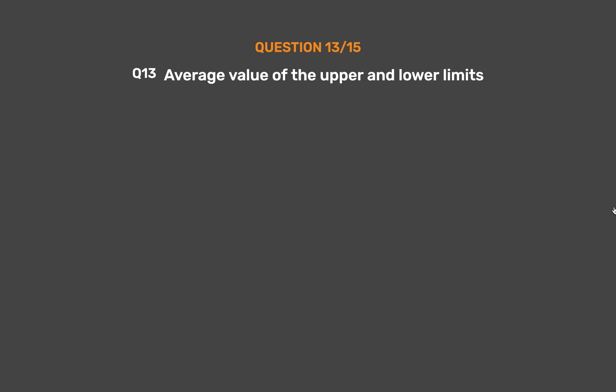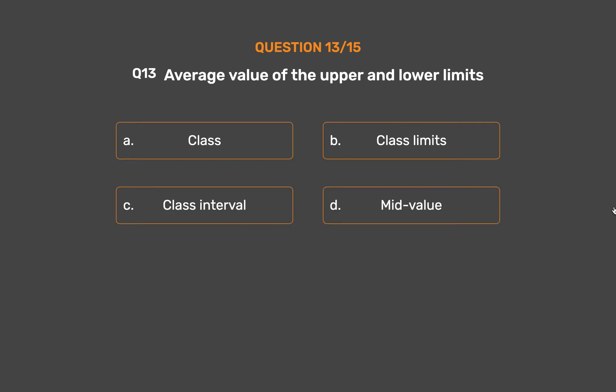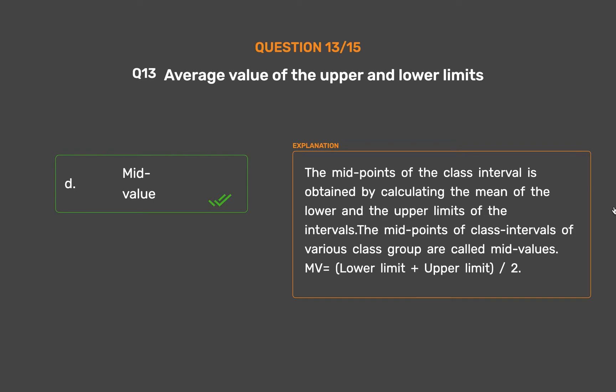Question number 13. Average value of the upper and lower limits: Option A: Class. Option B: Class limits. Option C: Class interval. Option D: Midvalue. The midpoints of the class interval are obtained by calculating the mean of the lower and upper limits of the intervals. The midpoints of class intervals of various class groups are called mid-values. MV equals lower limit plus upper limit divided by 2.